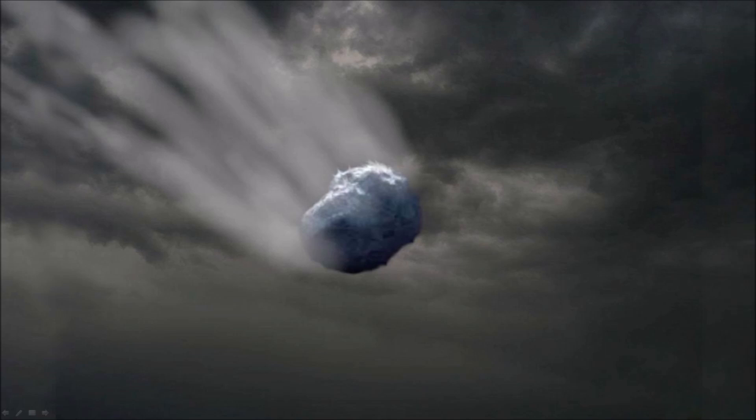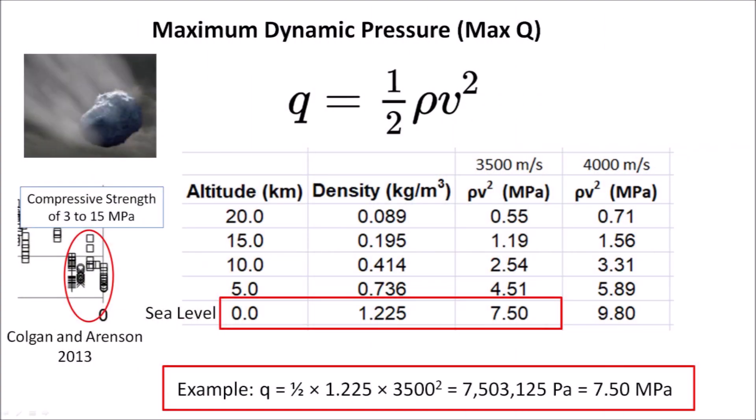In order for the Carolina Bays to have formed, the ice boulders would have had to survive the aerodynamic forces of re-entry to be able to strike the ground, as stated by the Glacier Ice Impact Hypothesis. The density of the atmosphere decreases with altitude. Calculating the maximum dynamic pressure for speeds of 3.5 and 4.0 km per second, we can see that the aerodynamic forces are smaller than the compressive strength of glacier ice, which has a high range of 15 MPa. This means that ice boulders could have survived re-entry through the atmosphere without breaking up.